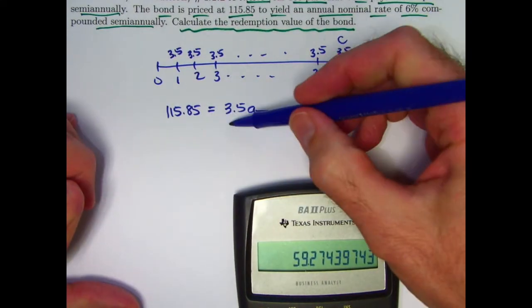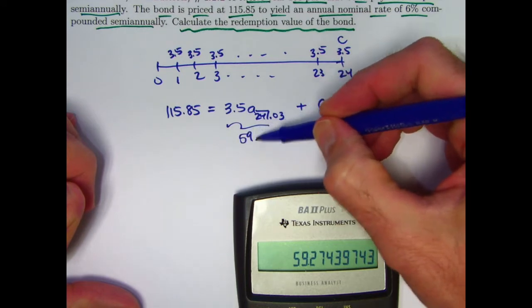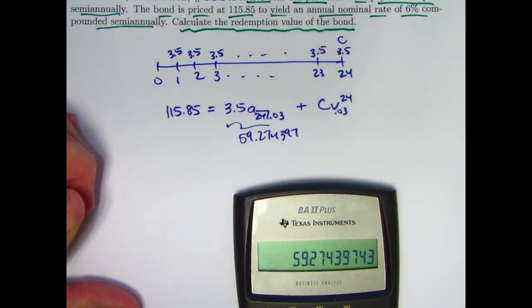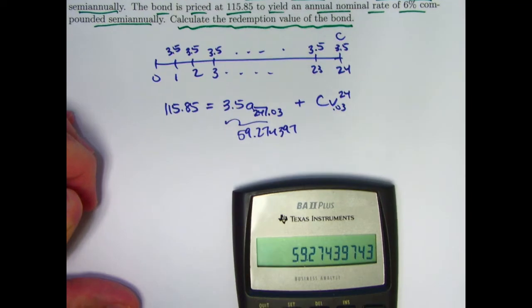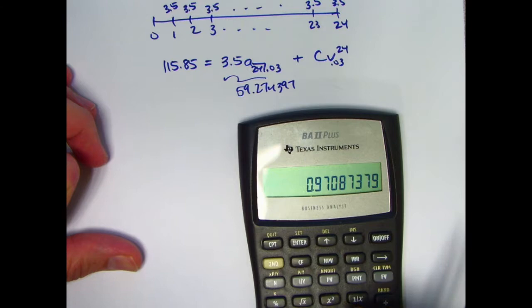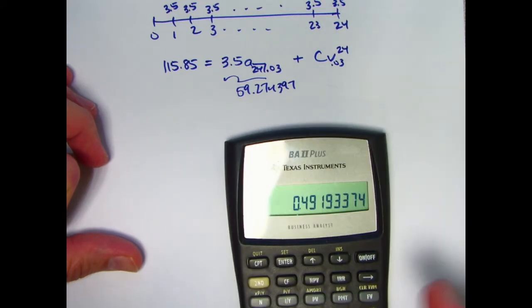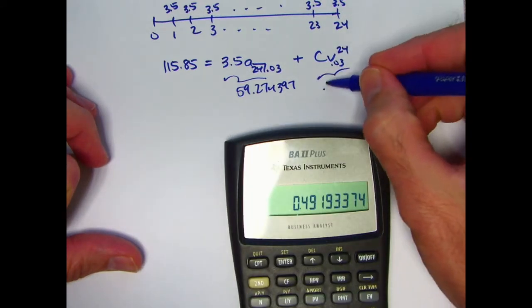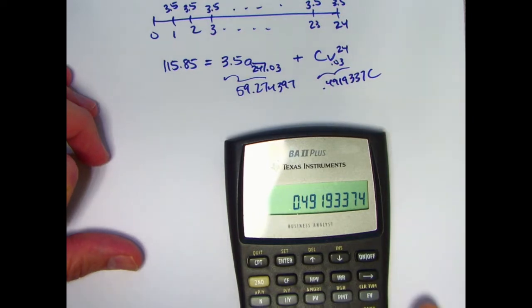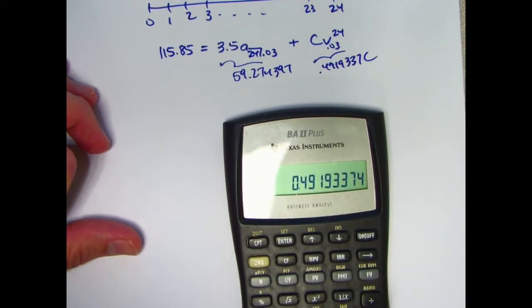This thing is 59.274397. I'll go ahead and store it anyway, store it in register 1. How about V 0.03 to the 24th power, 1.03 reciprocal to the 24th power. This is 0.4919333 times C. I'll store that number in register 2.